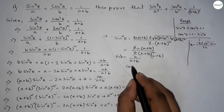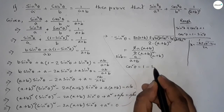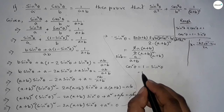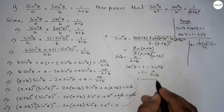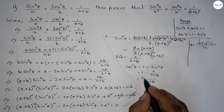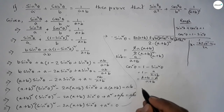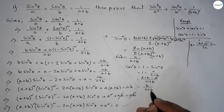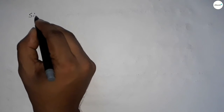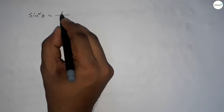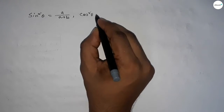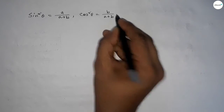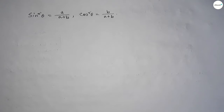Now we can write cos²θ = 1 − sin²θ. Substituting the value of sin²θ: cos²θ = 1 − a/(a+b) = (a+b−a)/(a+b) = b/(a+b). So we have sin²θ = a/(a+b) and cos²θ = b/(a+b).